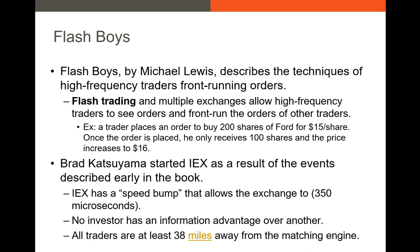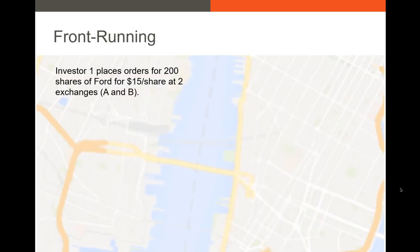IEX has several advances, the most famous of which is what's dubbed the 'speed bump.' The speed bump essentially slows down all orders that come into its matching engine — the engine that matches up buy and sell orders. It's literally as simple as 38 miles of fiber optic cable. The speed bump slows down every order so that by the time it reaches the matching engine, a high frequency trader cannot receive that order information and use it to trade on another exchange. It slows all information by about 350 microseconds.